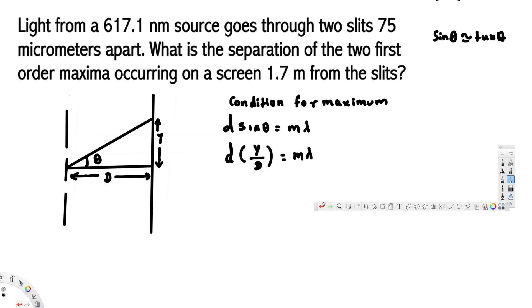Here we have to find y because the question is asking for the separation of the two first order maxima occurring on the screen. This means it's going to be 2y, 2 times y that will give us the answer. So in order to do this problem, first we have to find y. We're going to rearrange this equation. If we rearrange, we get y = mλD/d.